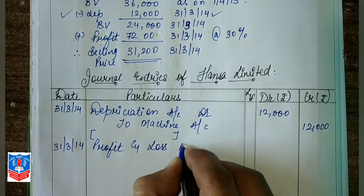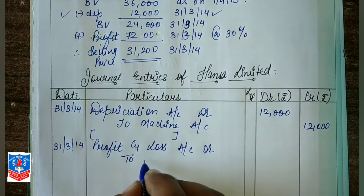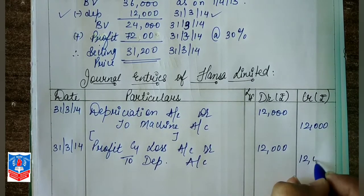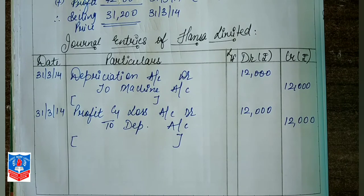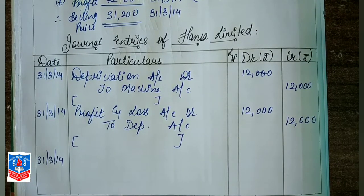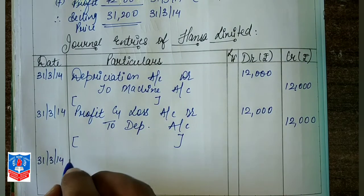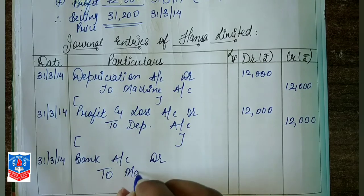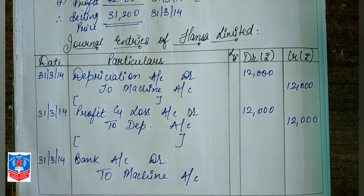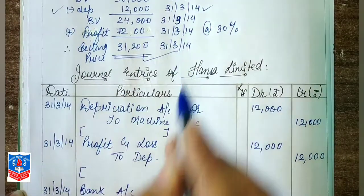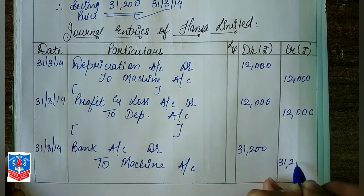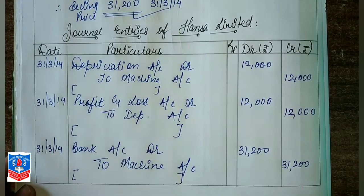Profit and Loss Account debit to Depreciation Account with 12,000. Next, we are selling the machine on 31/3/14. When we sell the machine, money will come into the bank — so bank becomes the receiver. Journal entry: Bank Account debit to Machine Account. The selling price is 31,200, so bank receives 31,200.